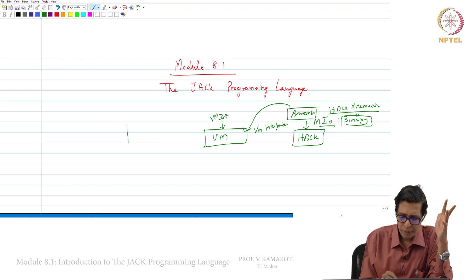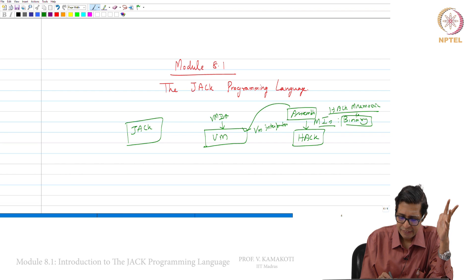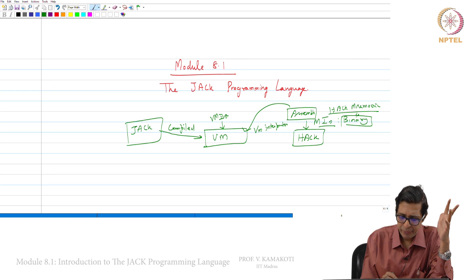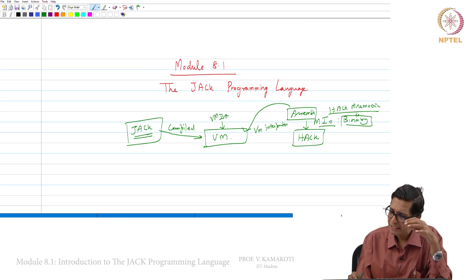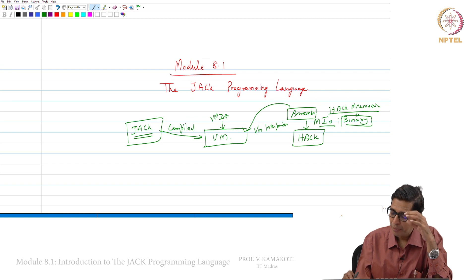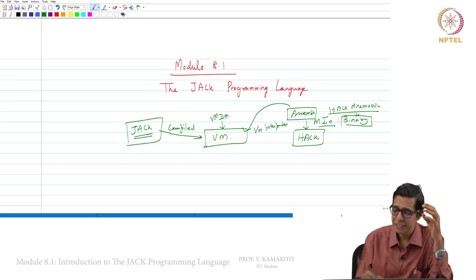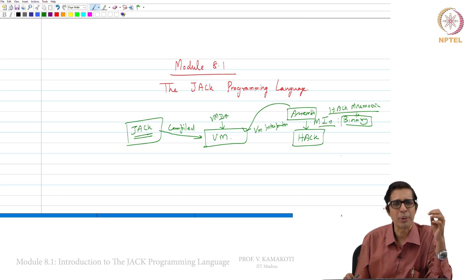Now we are defining the high-level programming language which is JAK. We will write programs in JAK, and that will be compiled into the virtual machine. The virtual machine interpreter will make it into assembly, the assembler will convert that mnemonic to binary, and then you can execute on Hack. This is the entire sequence we are going to follow.